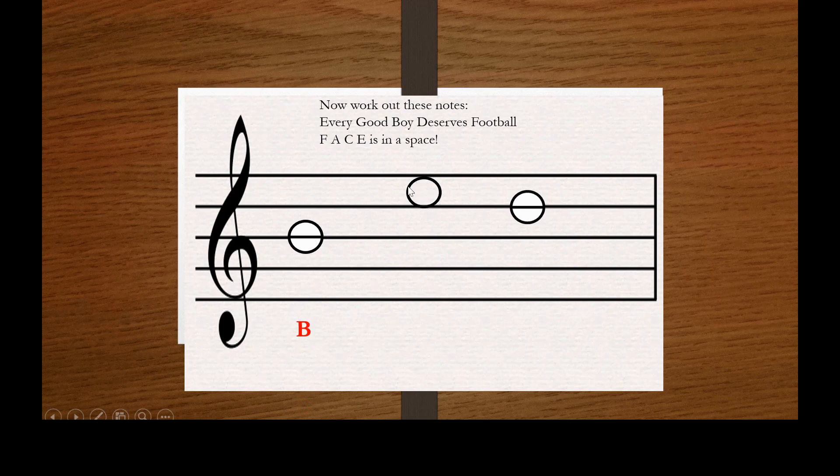This one is the top space, so I'm going to count the spaces. Use the rhyme: F, A, C, E. And this one is the line again. Use the rhyme: every good boy deserves. And you get the word bed. Have a go at the next one.